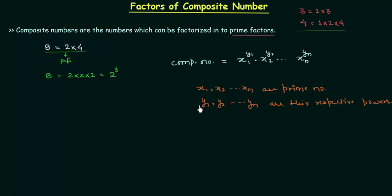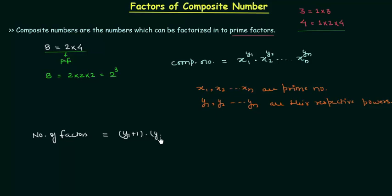We can easily find out the prime factors of a composite number, but we want to find the number of factors. The number of factors is equal to (y1 plus 1) multiplied by (y2 plus 1), up to (yn plus 1). We find the indexes of the prime factors, add 1 to each, and then multiply them together.